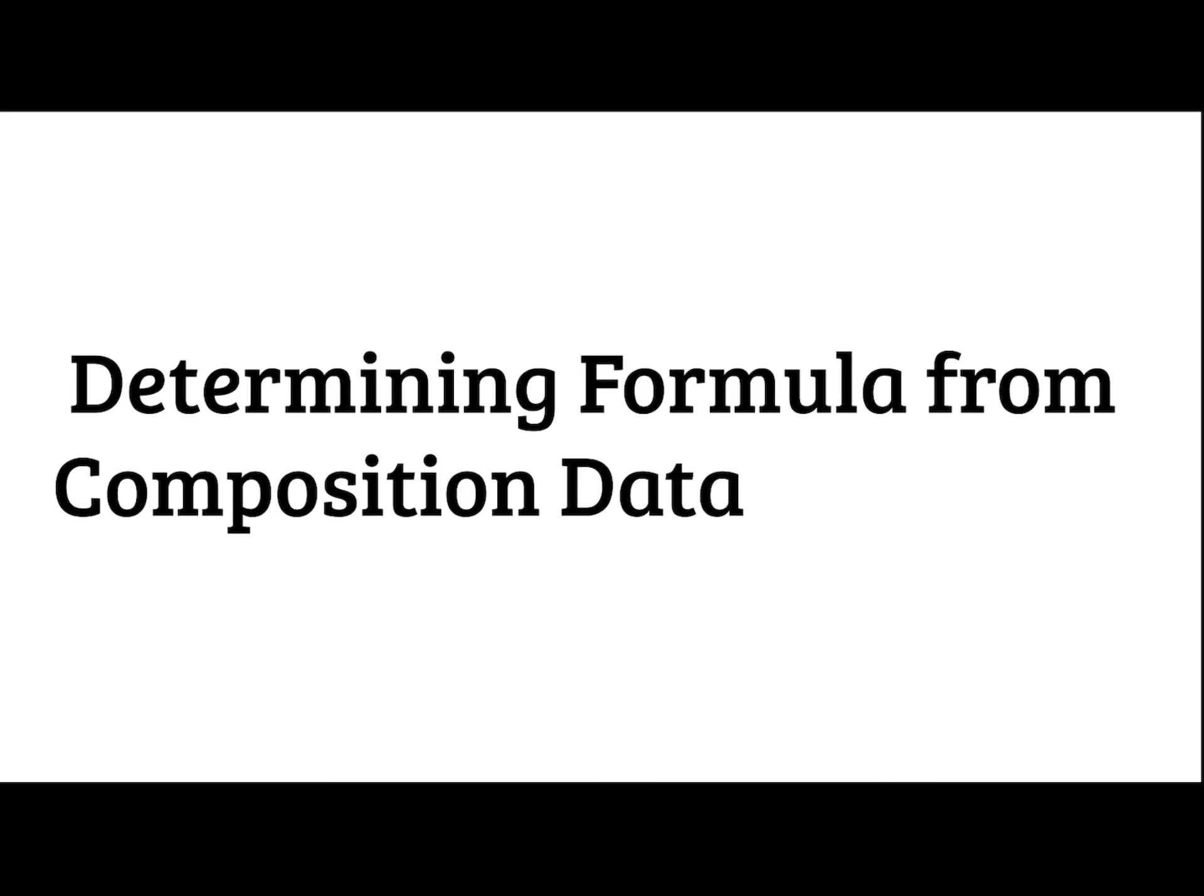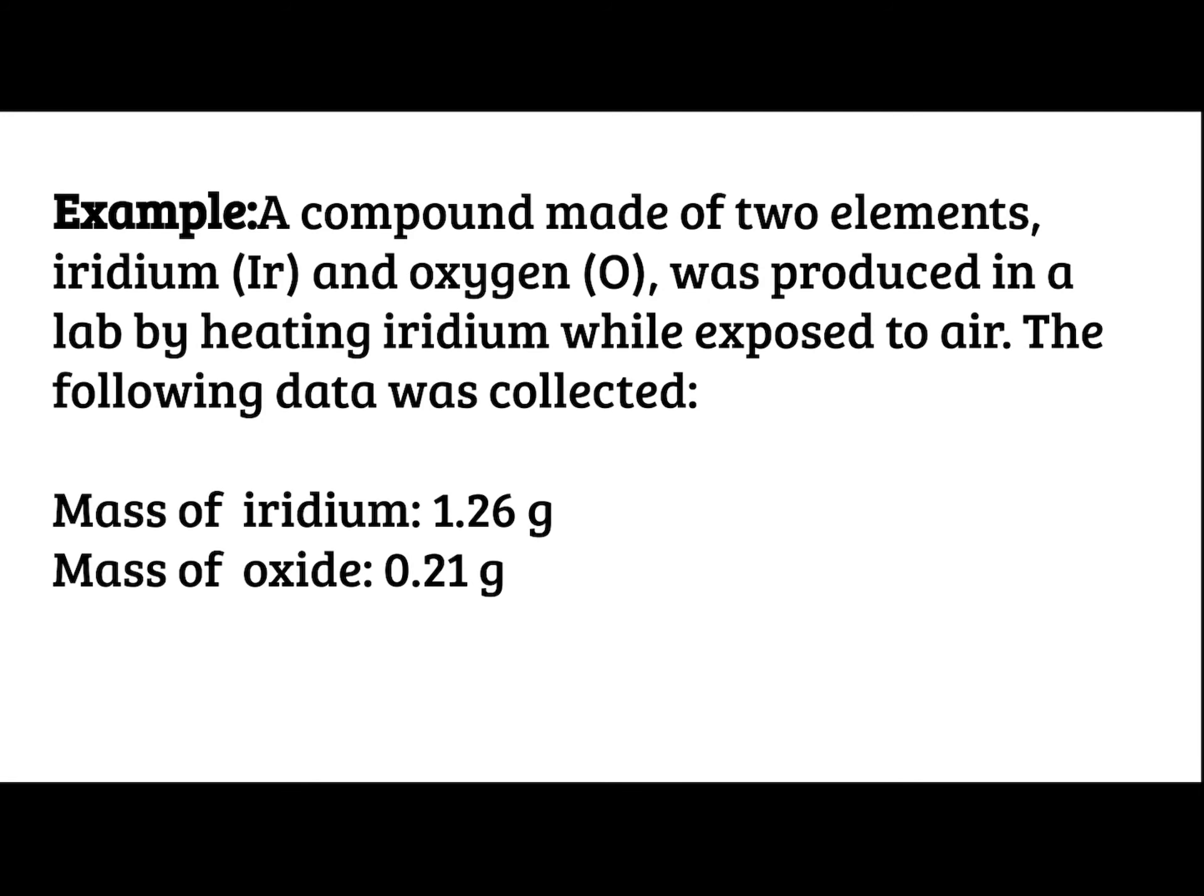Determining formula from composition data. So you may see a question like this on a test. It says, a compound made of two elements, iridium and oxygen, was produced in a lab by heating iridium while exposed to air. The following data was collected. So I have the mass of iridium, which is 1.26. And I have the mass of oxygen, or oxide, which is 0.21.